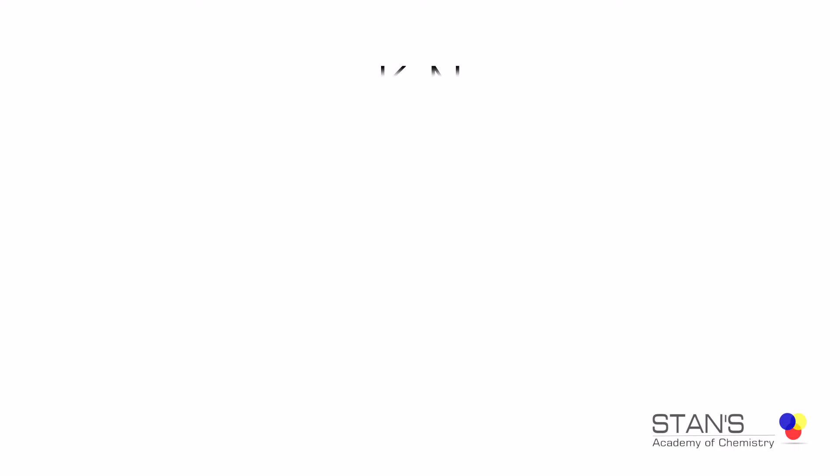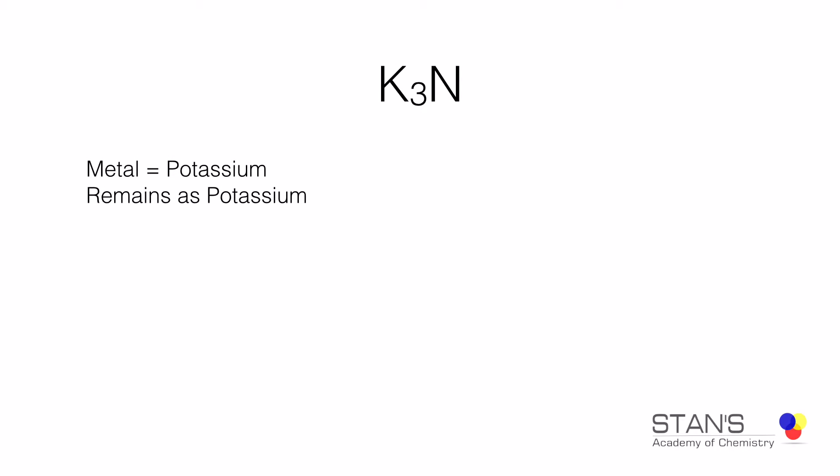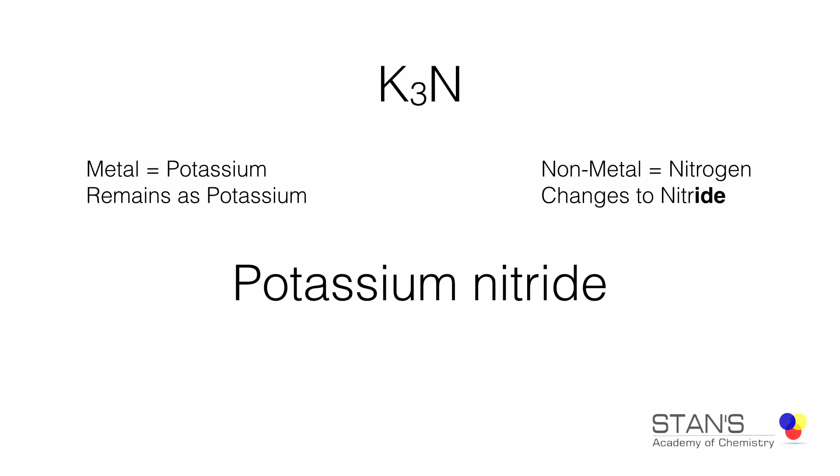In the second example, the elements present are potassium and nitrogen. The metal is potassium, therefore there is no change in the name of the metal. The non-metal is nitrogen, and non-metals always end in IDE, therefore it changes into nitride. So the name of the compound is potassium nitride.